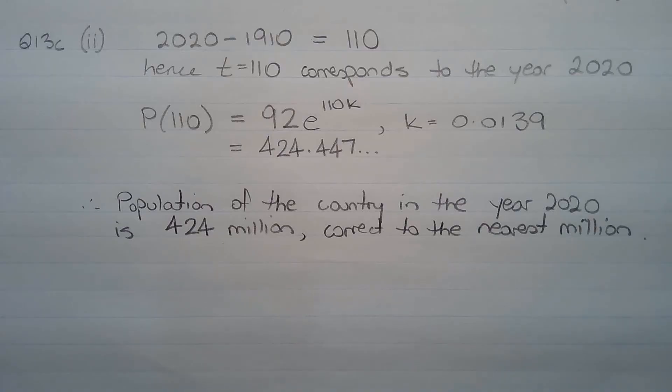The first step is to determine the value of t that corresponds to the year 2020, which is the difference between the year 2020 and the starting year of 1910. So 2020 - 1910 = 110 years.